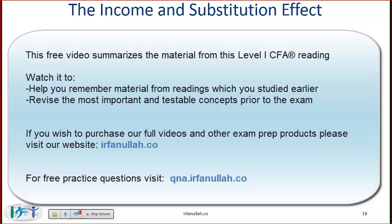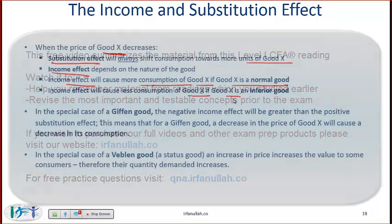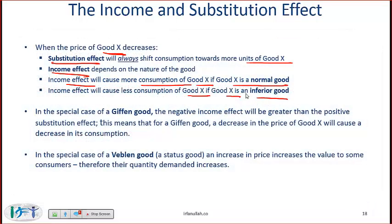The income effect will cause more consumption of good X if X is a normal good, and less consumption of good X if X is an inferior good. In the special case of a Giffen good, the negative income effect will be greater than the positive substitution effect.